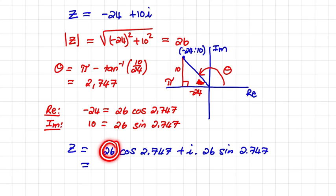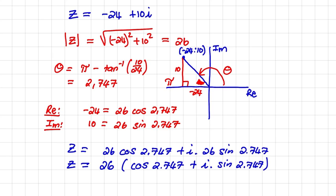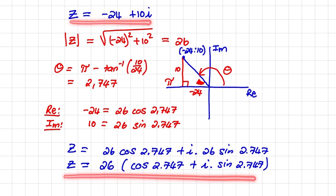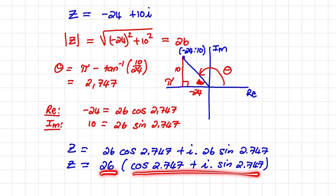Notice that we can take out a greatest common factor of 26, which is the modulus of our complex number. So z equals 26 times cos of 2.747 plus i times sine of 2.747. And that is how we rewrite a complex number in modulus-argument form.